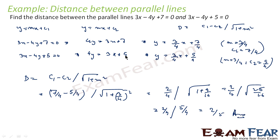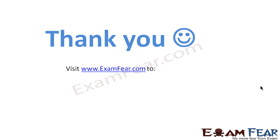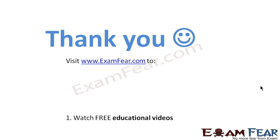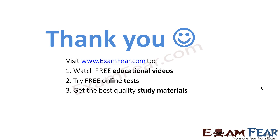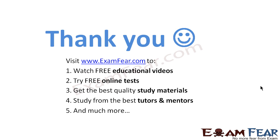Very simple. What we have done: we had two equations, converted them into y = mx + c1 form, found the values of m, c1, and c2, then used the formula d = |c1 − c2| / √(1 + m²) to get the answer. Thank you. Visit examfia.com to watch free educational videos, try free online tests, get the best quality study materials, and study from the best tutors and mentors. Thanks once again.